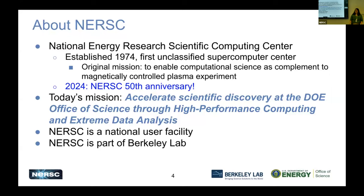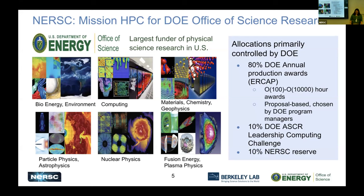NERSC is a national user facility housed here at Berkeley Lab. We are the mission HPC center for the DOE Office of Science Research. The Department of Energy Office of Science is the largest funder of physical science research in the United States. They fund primarily six areas: bioenergy and environment, computing, materials, chemistry, and geophysics, particle physics and astrophysics, nuclear physics, and fusion energy and plasma physics. Allocations at NERSC are controlled primarily by DOE — 80% of our awards go through the ERCAP program, the Energy Research Computing Awards Process.